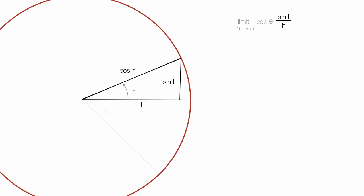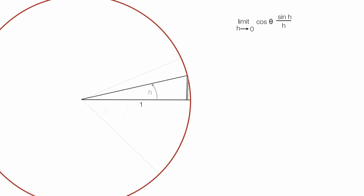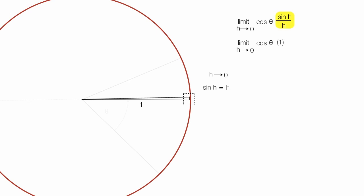Now for the second case — I'm going to focus in on sine h. I'll let h approach 0 again, so the line rotates around and sine h becomes smaller and smaller. As h gets smaller, sine h gets smaller. As h approaches 0, sine h equals h. You'll see that sine h is just about exactly the same as h, the arc distance. So sine h divided by h is 1, and this all equals cosine theta. So in the second case, as h approaches 0, sine h equals h and the whole thing approaches cosine theta.